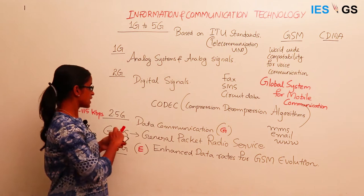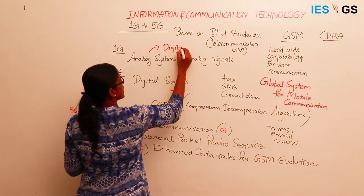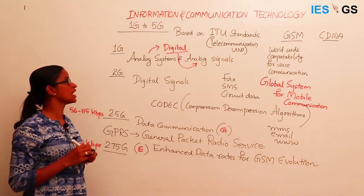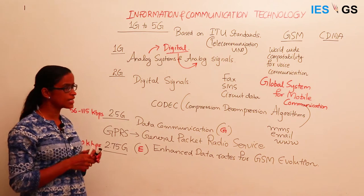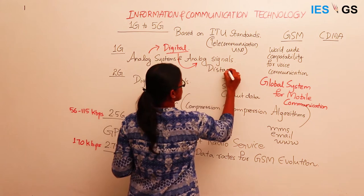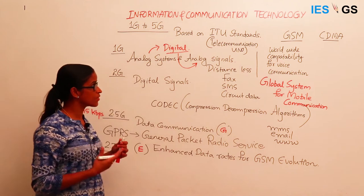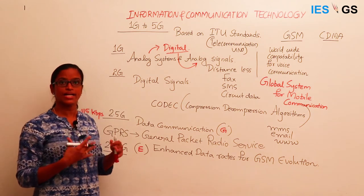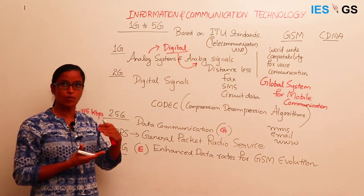Later, digital control for analog signals evolved, so we were able to digitally control the analog signals used for transmission. At that time, the handsets were very bulky and the area coverage — that is, the distance of communication — was also less. Different standards evolved, first region-wise especially in Europe, and later it was extended to cover global standards.